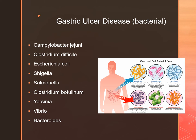H. pylori can also slowly lead to chronic gastritis, atrophic gastritis, intestinal metaplasia, and eventually gastric adenocarcinoma. Campylobacter jejuni is the most common bacteria that causes GI disease in the Campylobacter family, referred to as campylobacteriosis. It primarily causes diarrhea and is the leading cause of gastroenteritis worldwide. It is a zoonotic disease, meaning it's transferred from animals or animal products — specifically eating raw or undercooked meats, unpasteurized milk, or drinking contaminated water.